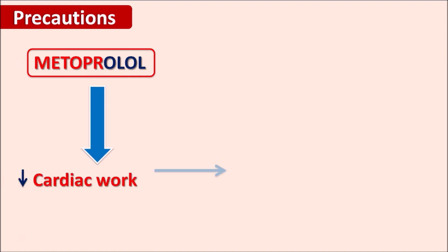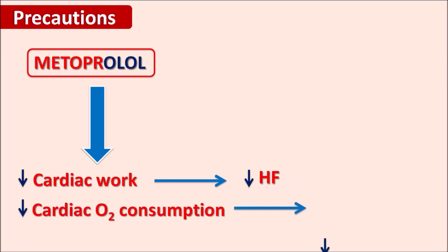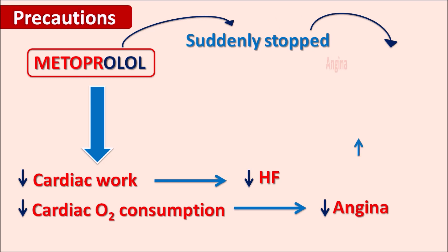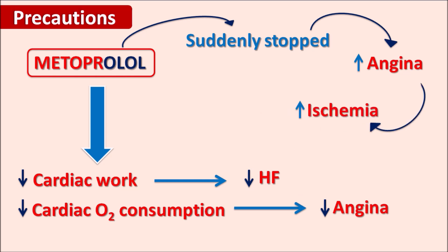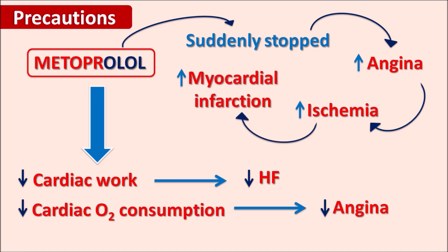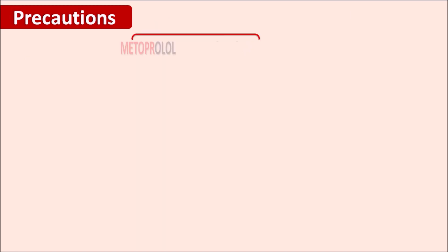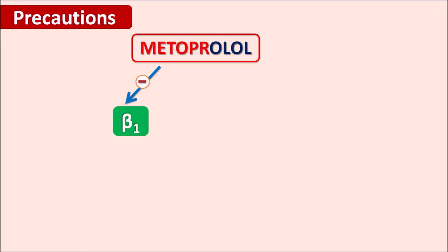Another precaution: metoprolol reduces cardiac work and cardiac oxygen consumption, which is why it relieves angina. However, if this drug is suddenly stopped, angina can increase, reducing cardiac oxygen supply and leading to ischemia, which can result in damage to cardiac cells and myocardial infarction. Therefore, metoprolol should not be stopped suddenly — the dose should be slowly tapered to prevent rebound cardiovascular disorders.